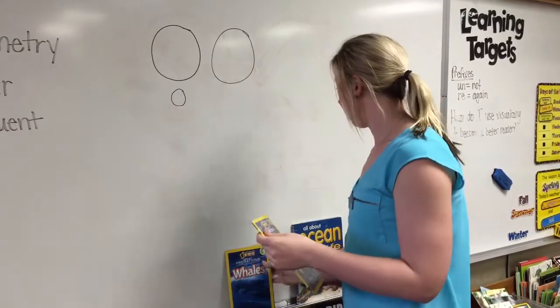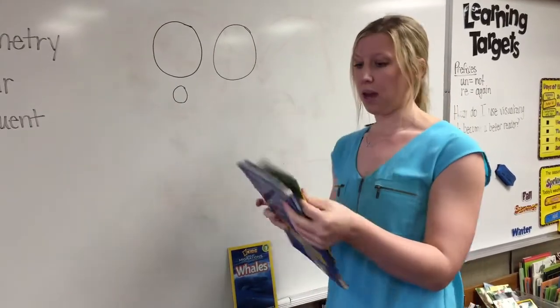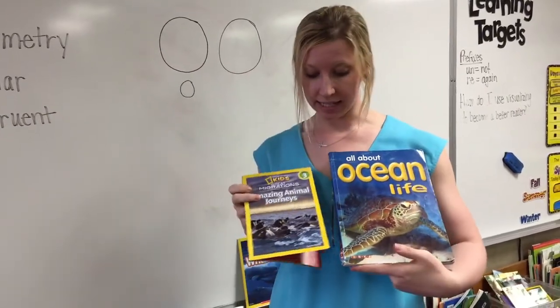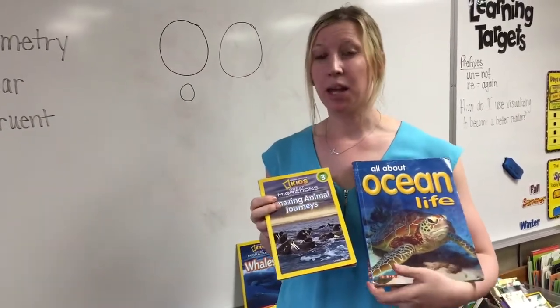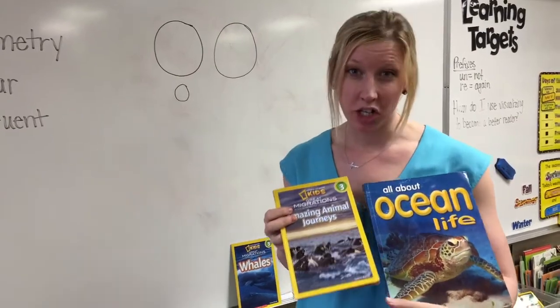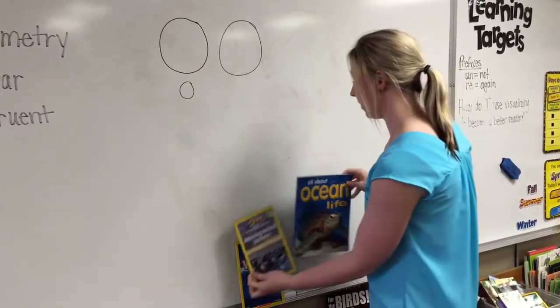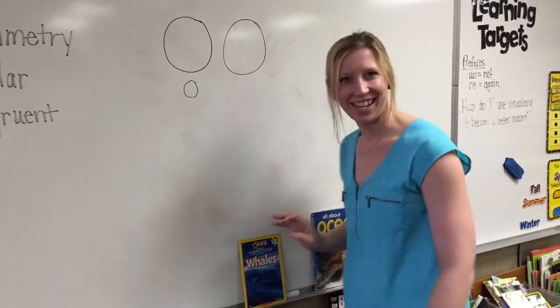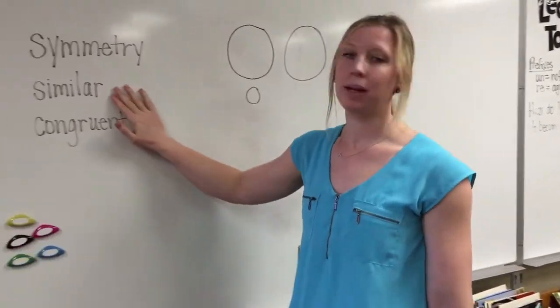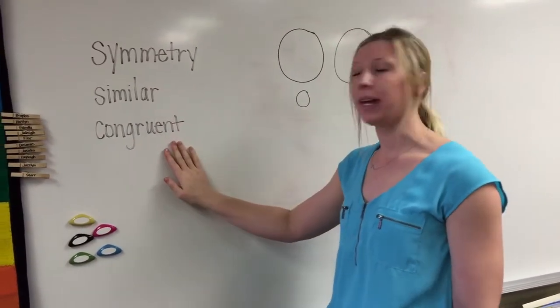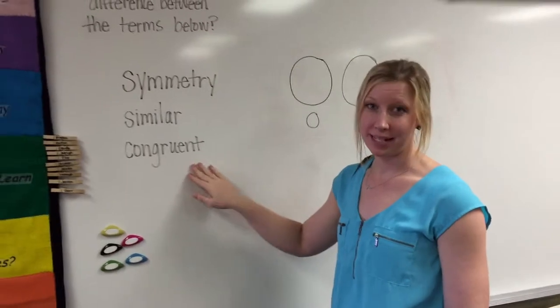But now what if I take a rectangle that's this size and a rectangle that's this size, they're different sizes, but they're still similar shapes because they're both rectangles. So those terms can get a little bit confusing, but you just remember that similar is like it's the same shape. Congruent, it's also the same size.